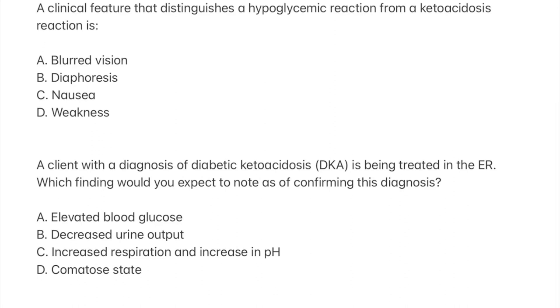The last question: a client with diagnosis of diabetic ketoacidosis is being treated in the ER. Which finding would you expect to note as confirming this diagnosis? The answer is A, elevated blood glucose levels. In diabetic ketoacidosis, the arterial pH is going to be less than 7.35. Of note would be low plasma bicarbonate levels. The blood glucose levels would be much higher than in a normal person, and there could be ketone bodies present in the blood and urine.